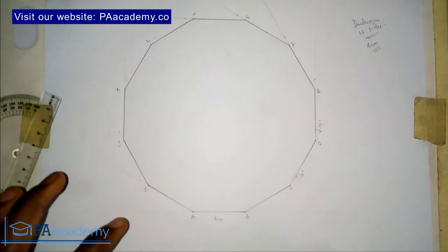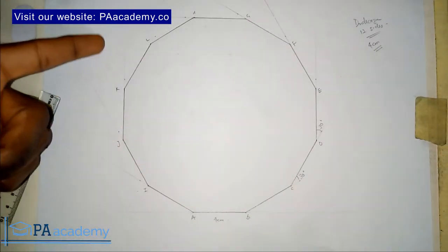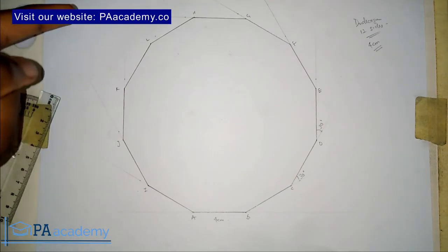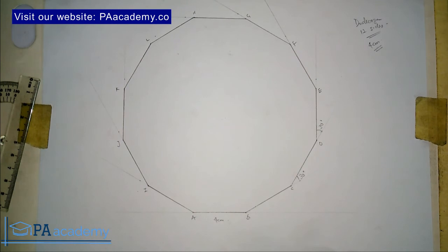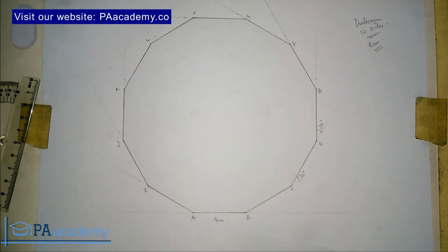Method 3 on how to draw a dodecagon will be coming up immediately after this video — it's going to appear somewhere here, so once you click on it it will take you to method 3. If you missed method 1, check the description of this video for the link. I will also put links to other regular polygons — pentagon, hexagon, heptagon — in the description. Thank you very much for watching, don't forget to subscribe to PA Academy, feel free to share this video, give it a thumbs up, and I will see you in method 3.